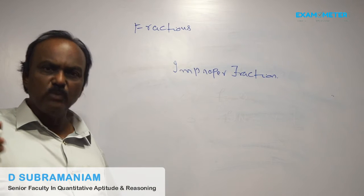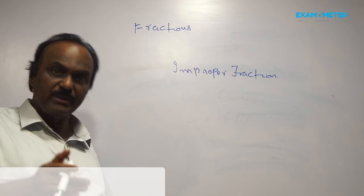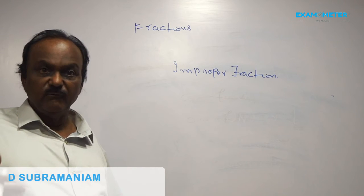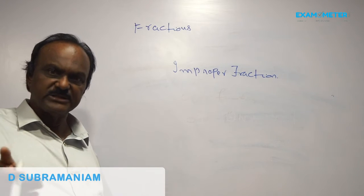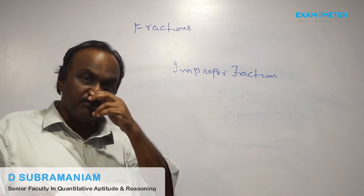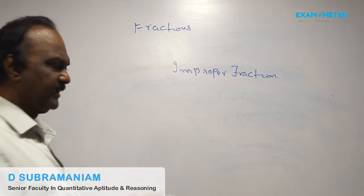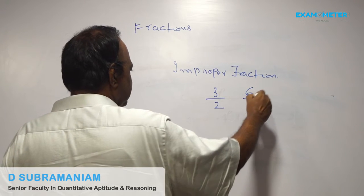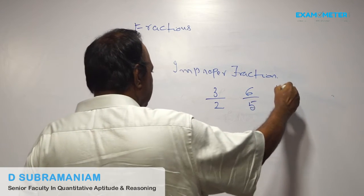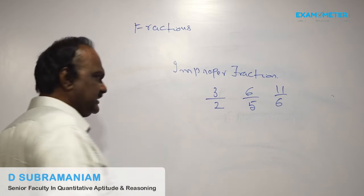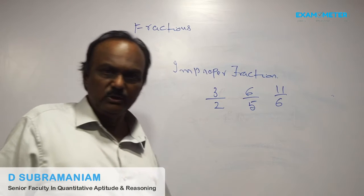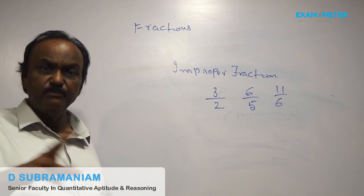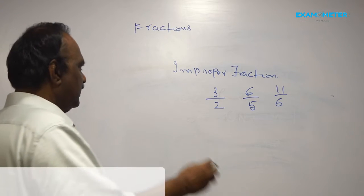Improper fraction: when the numerator is greater than its denominator, then it is called an improper fraction. Examples: 3 by 2, 6 by 5, 11 by 6, etc.